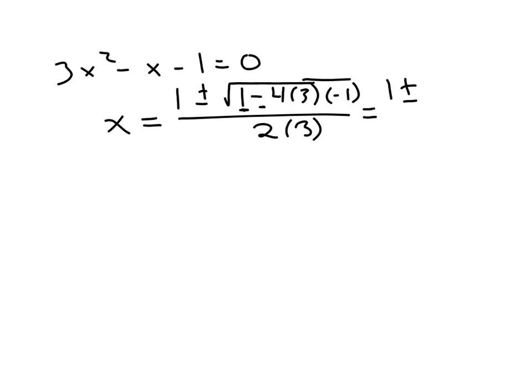And so that's one plus or minus. Under the square root, you'd have one minus negative 12. So you're actually going to have one plus 12.